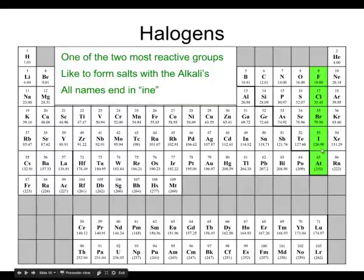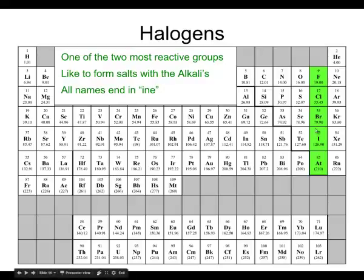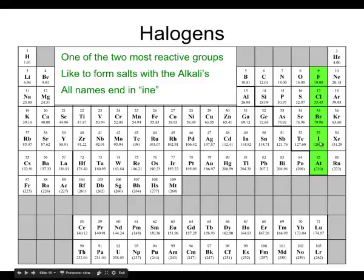Way over on the other side, in the next-to-last column, are the halogens. Just like the alkali metals, the halogens are highly reactive and you'll never find them by themselves in nature. All of their names end with -ine: fluorine, chlorine, bromine, iodine, and astatine. That naming pattern helps you identify that an element is a halogen because they all sound the same.